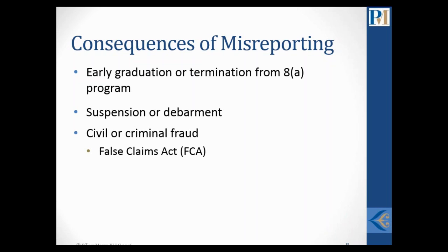In addition to early graduation or termination, misreporting could also result in suspension or debarment. You do have a chance to defend yourself, but that takes time, money, and other resources. The most serious consequences could be civil or criminal fraud. Tony and I have seen contractors accused of misreporting information and misrepresenting their 8A status to get contracts, which can lead to False Claims Act cases and other fraud allegations. Contractors in recent years have entered into settlements with the Department of Justice for millions of dollars based on that kind of conduct.